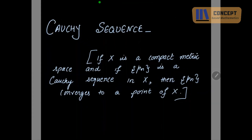Hello everyone. Let's start a new result. If X is a compact metric space and Pn is a Cauchy sequence in X, then Pn converges to a point of X. We have earlier proved that if X is a compact metric space and Pn is a Cauchy sequence in X, then some subsequence of Pn converges to a point of X. Here we have to prove that Pn itself converges to a point of X.